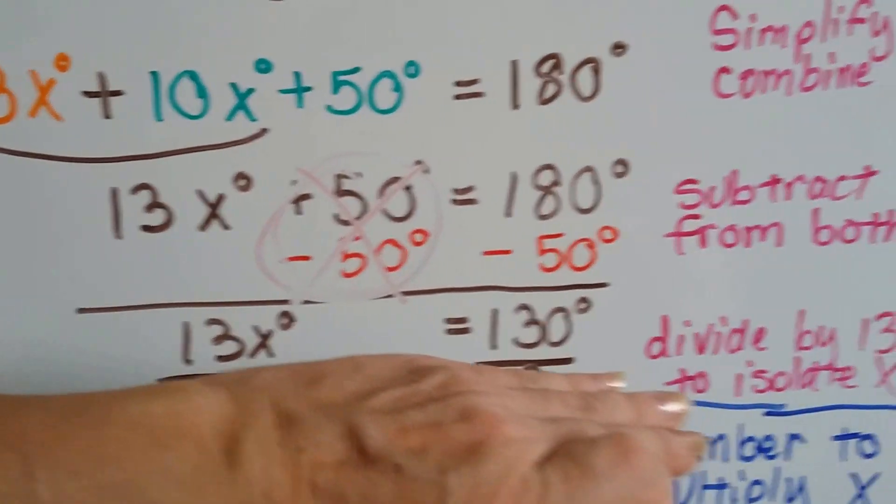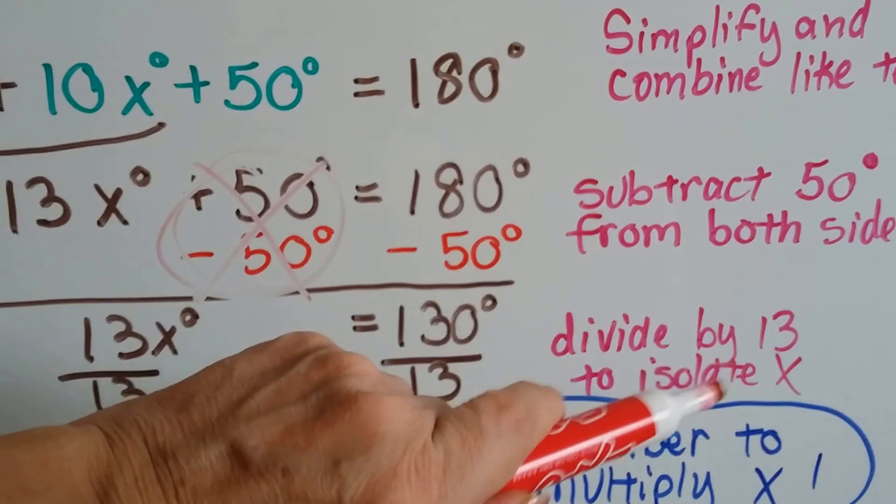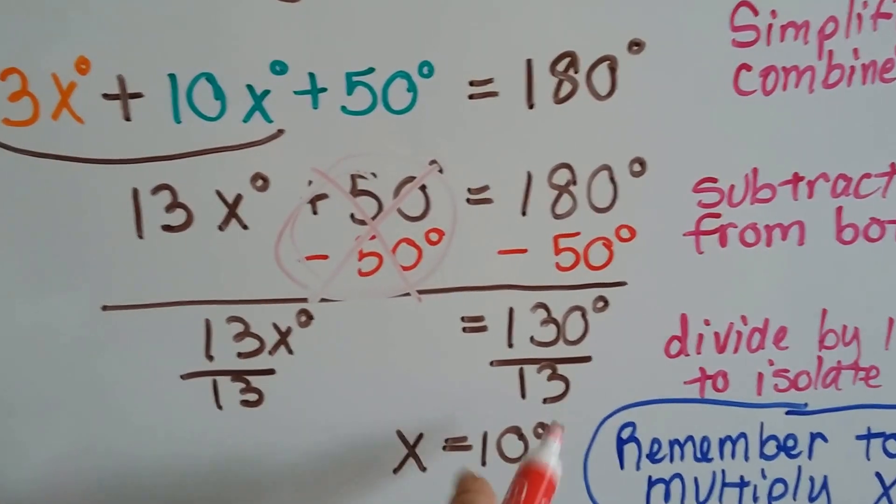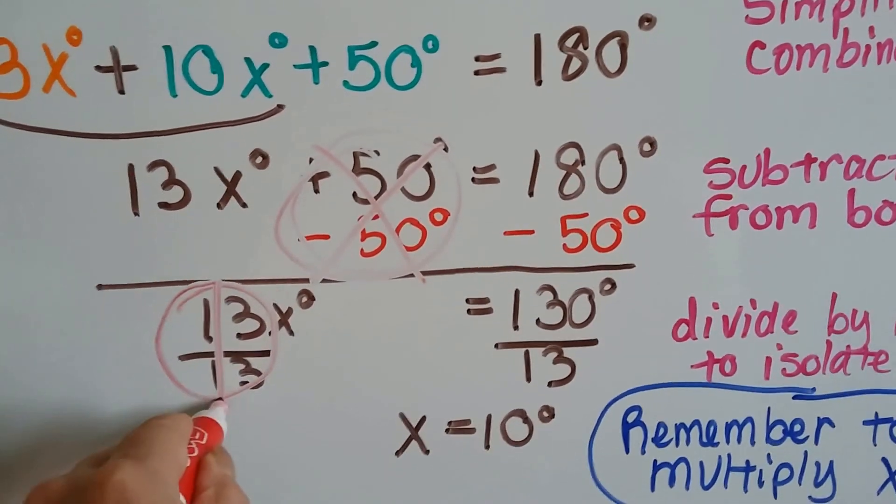Now, if we divide by 13 on each side, we can isolate the x. So we divide by 13, divide by 13, and 13 divided by 13 gives us our friend, the invisible one.